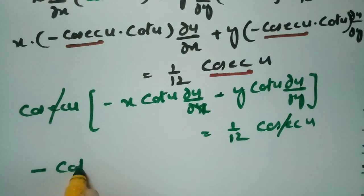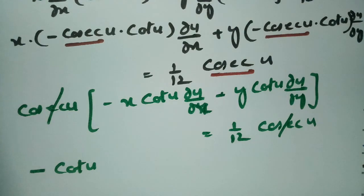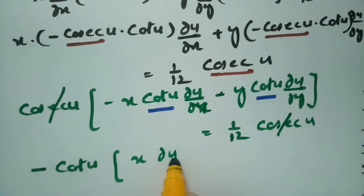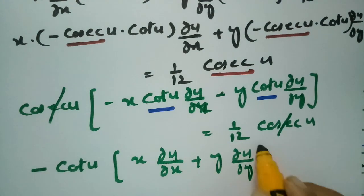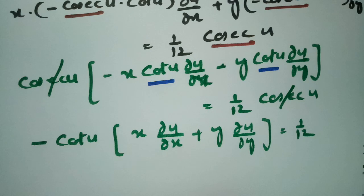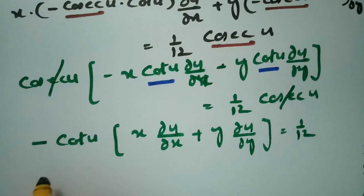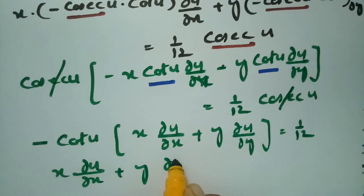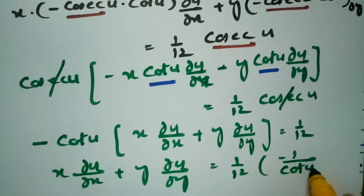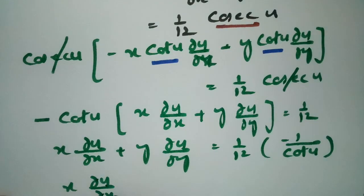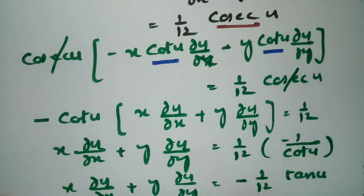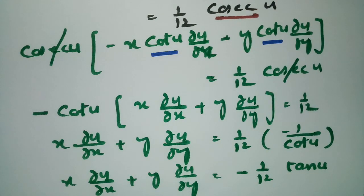Taking −cot(u) common and sending it to the other side: x · ∂u/∂x + y · ∂u/∂y = (1/12) × (−1/cot u) = −(1/12)·tan(u). So this is the first-order Euler's theorem result.